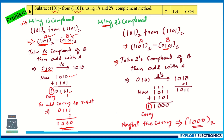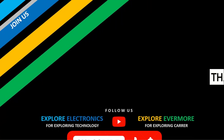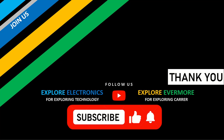Using 2's complement, take B = 0101, find 1's complement (1010), then add 1 to get 2's complement = 1011. Add A + 2's complement of B: 1101 + 1011 = 11000, generating a carry. In 2's complement subtraction, discard the carry; the result is 1000. These are important problems from the model question paper. Thank you.